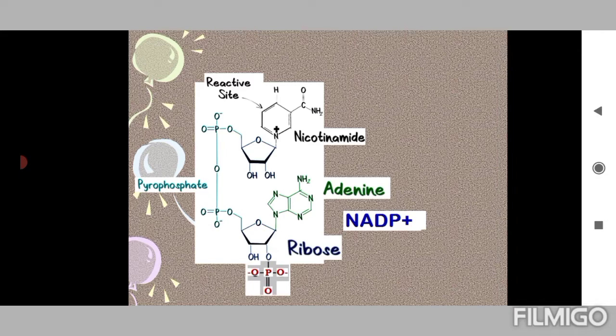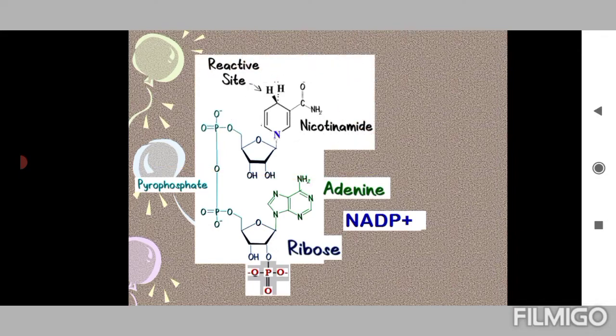NADP plus is reduced to NADPH. This is what happens, and the valency of nitrogen is reinstated. The valency of nitrogen, which is three, is reinstated as the electrons are accepted here.